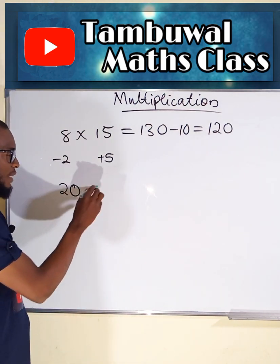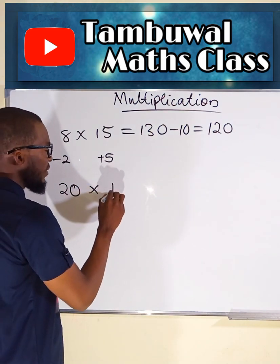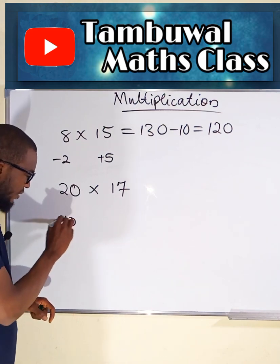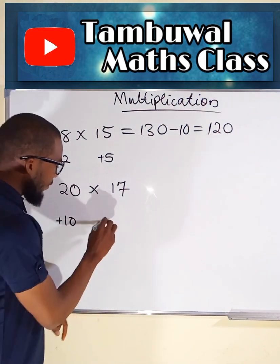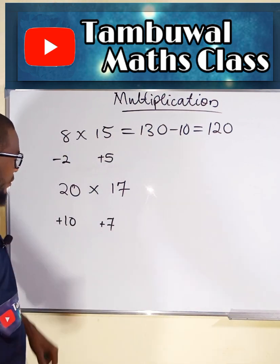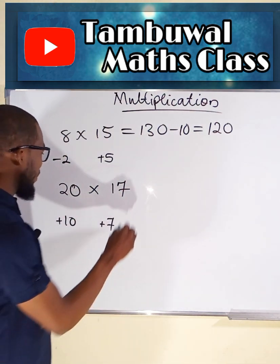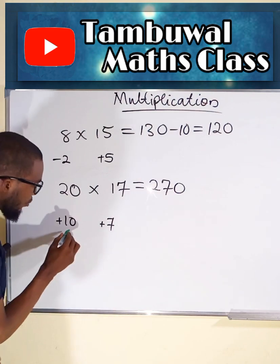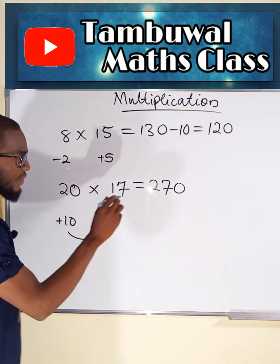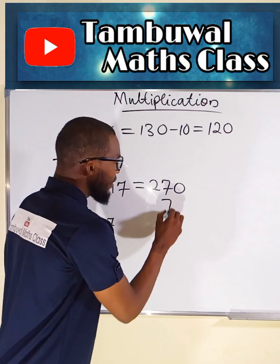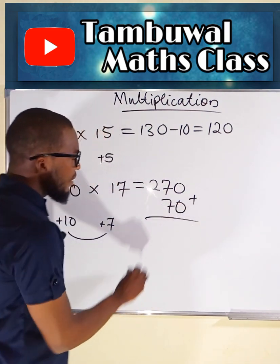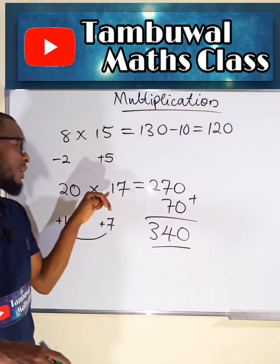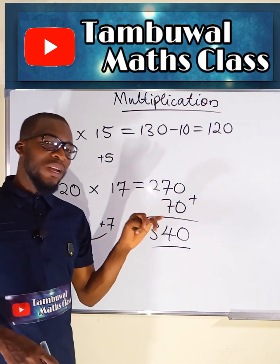Suppose we want to multiply 20 by maybe 17. 20 is 10 greater than 10, and 17 is 7 greater than 10. This plus this, or this plus this — either way you get 27. But add 0 at the end. Multiply these two numbers: 10 times 7 is 70. Then add 70 here. This is equal to 340. If you multiply 20 by 17, you shall obtain 340.